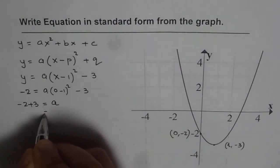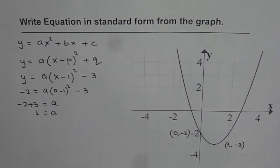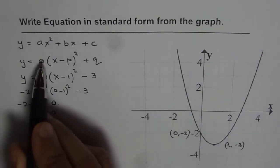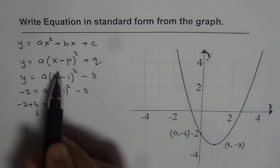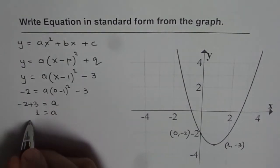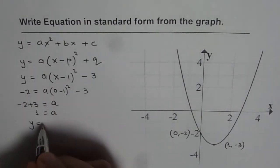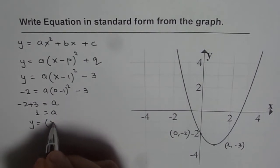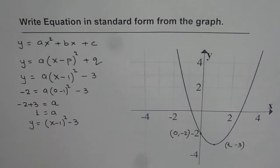And therefore, we get the value of a as 1. Now we know what a is, a is 1 for us, so we can write down this equation, which is y = (x - 1)² - 3. So this is the equation in vertex form.